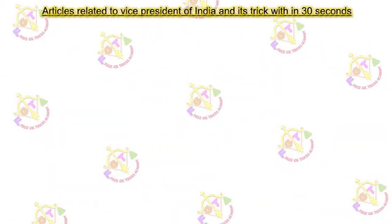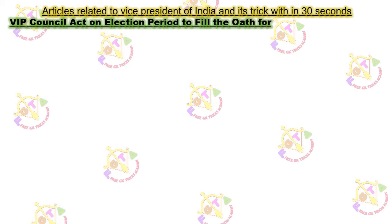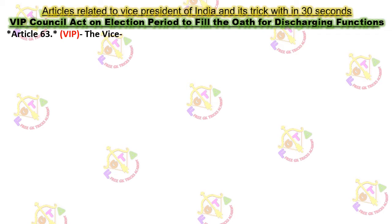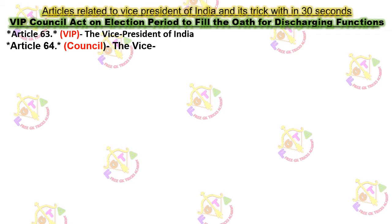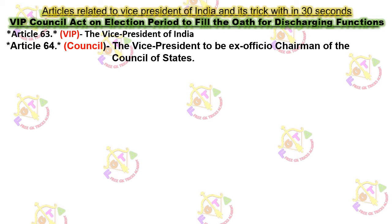Hello Friends! Welcome back to Free Zika Tricks Academy YouTube channel. Today we will discuss about articles related to Vice President of India and a trick to remember them within 30 seconds. The trick is: VIP Council act on election period to fill the oath for discharging functions. This is a simple trick you can remember within 30 seconds.